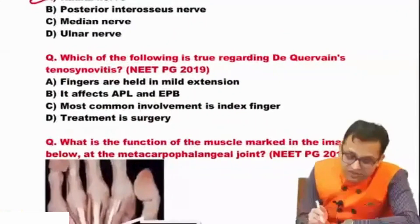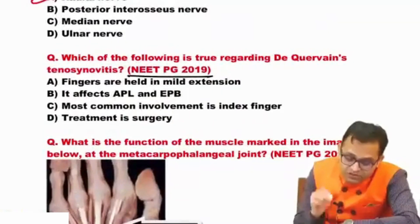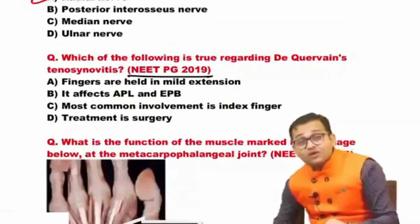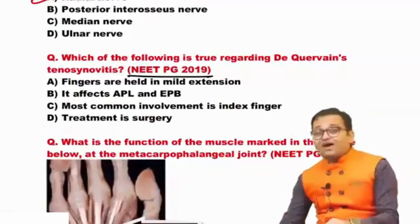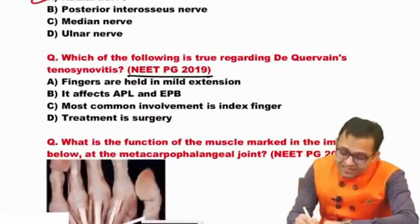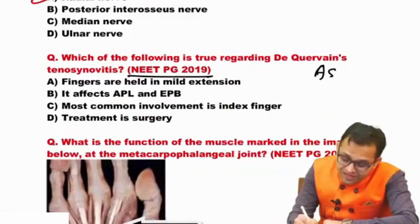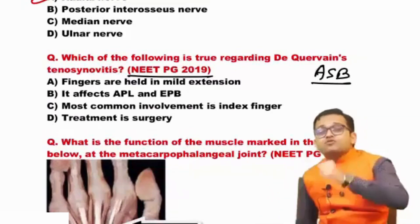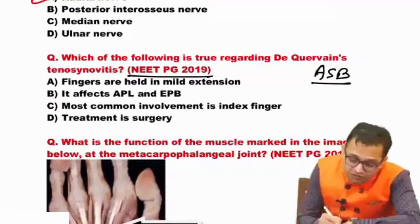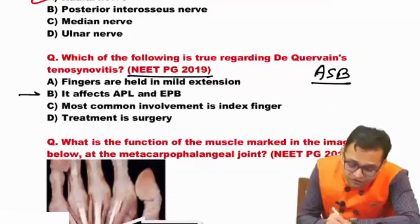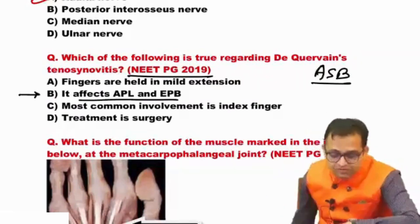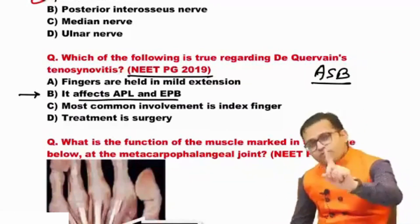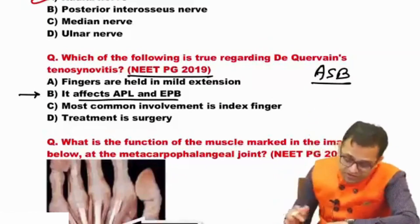NEET PG 2019 question: which of the following is true regarding de Quervain's tenosynovitis? This is again related to the anatomical snuffbox. The involvement is of the anatomical snuffbox muscles — abductor pollicis longus and extensor pollicis brevis — so we have to study the anatomical snuffbox.